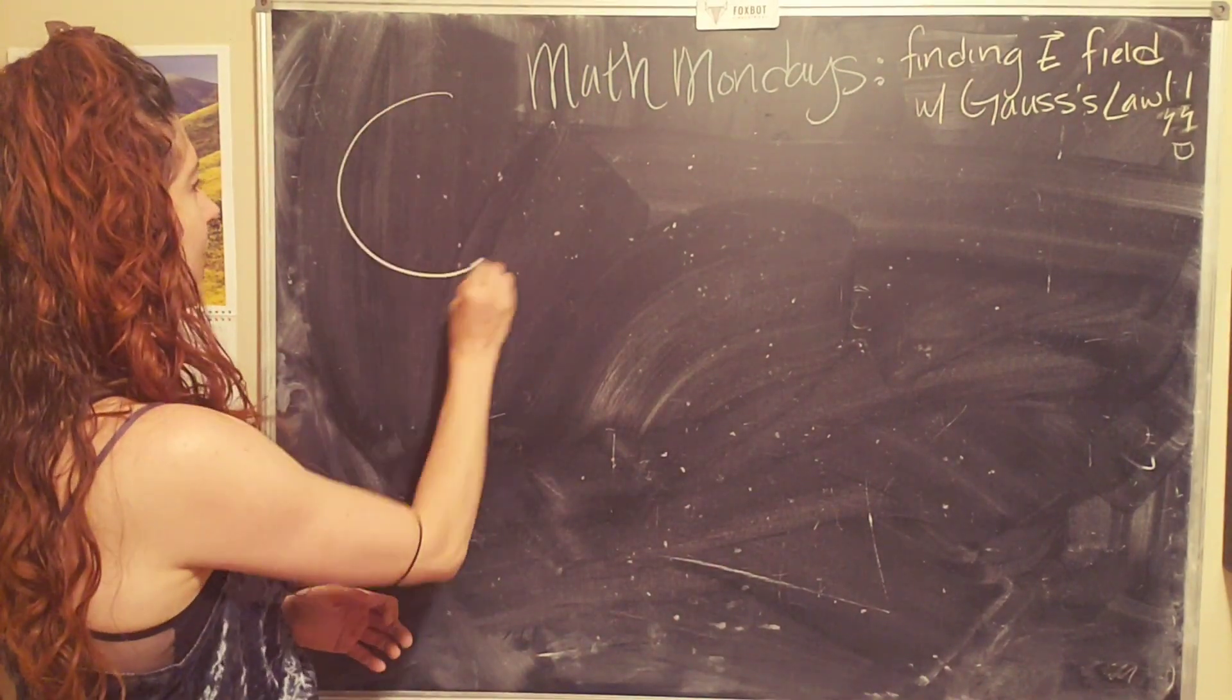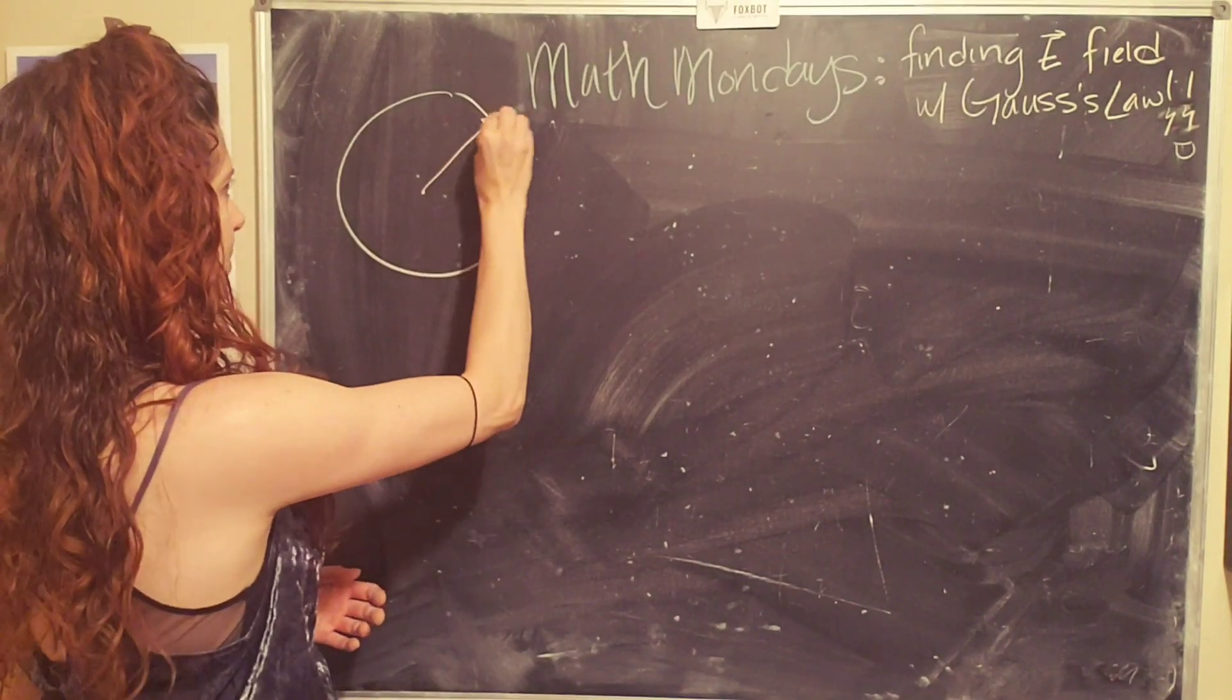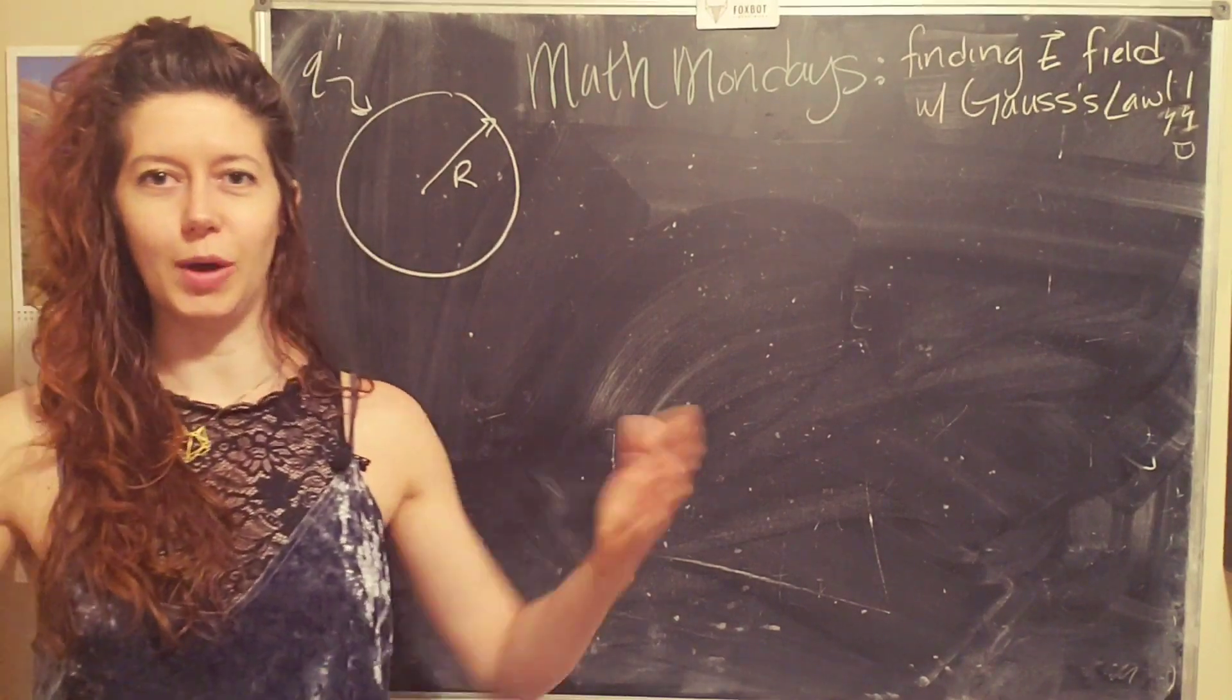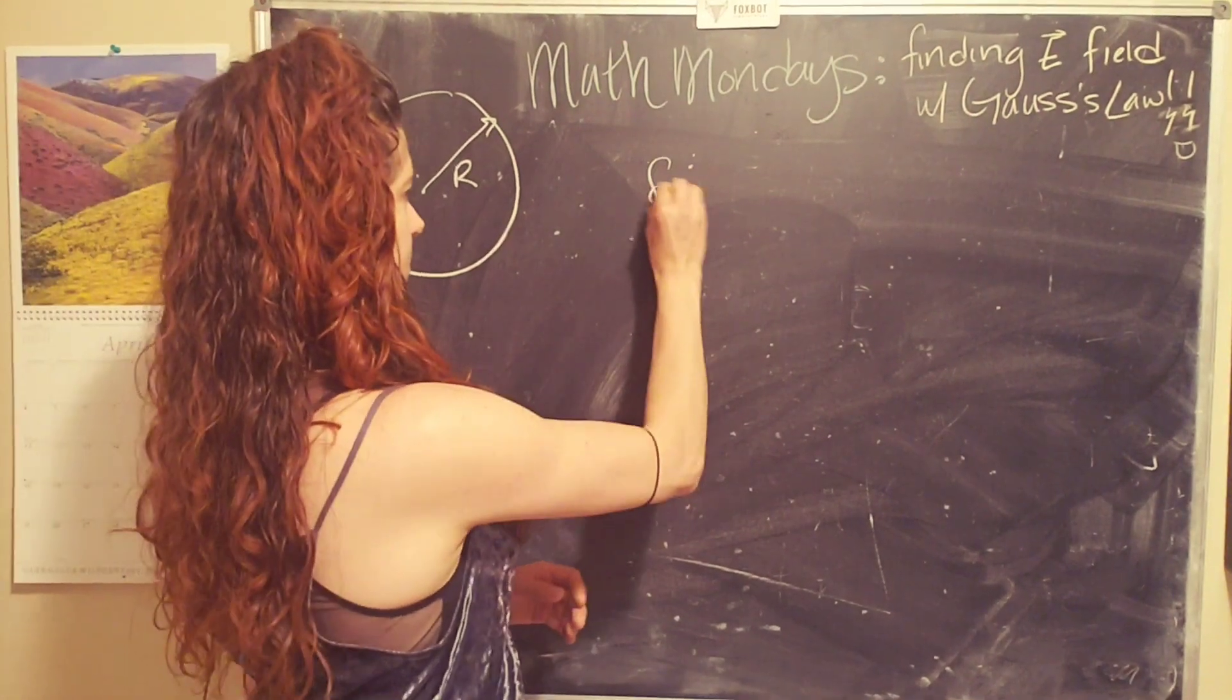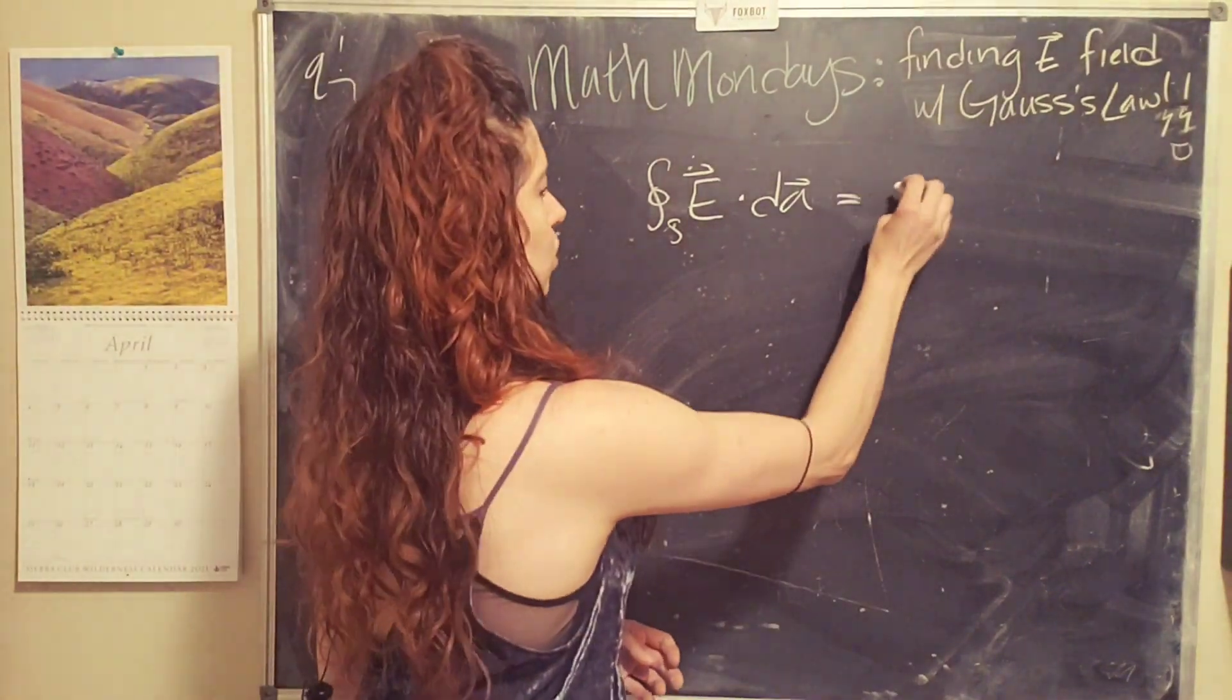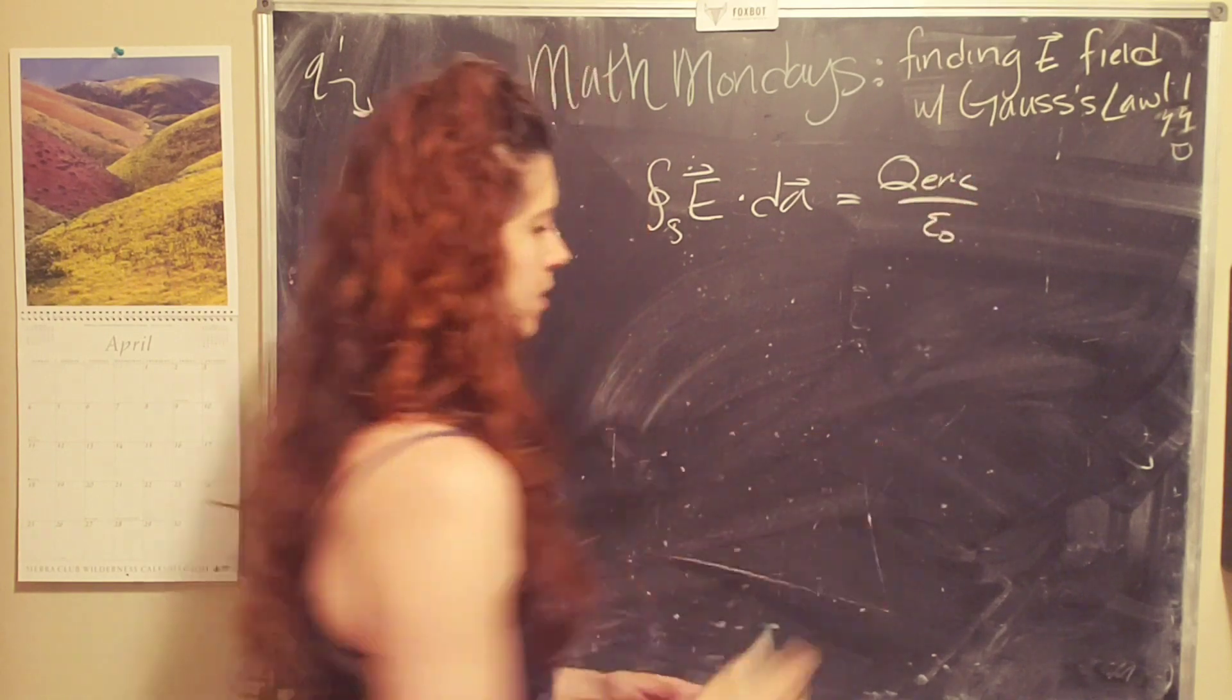So first we have a sphere of charge with radius capital R. And so I'm going to be like, hey, there's q on and throughout the sphere. Yay. So for Gauss's law, really quickly, we will write down Gauss's law. The electric flux, ∮E·dA equals q enclosed divided by epsilon naught.